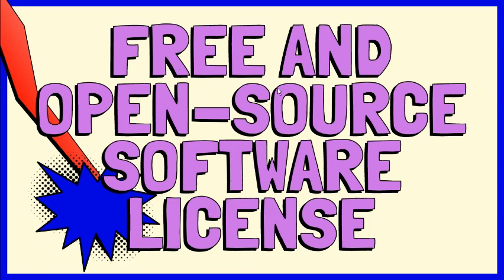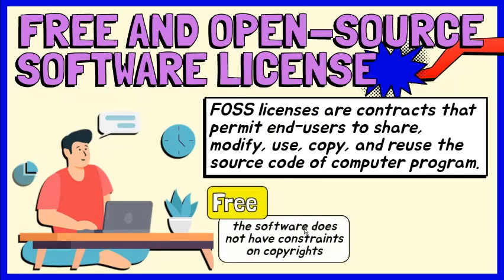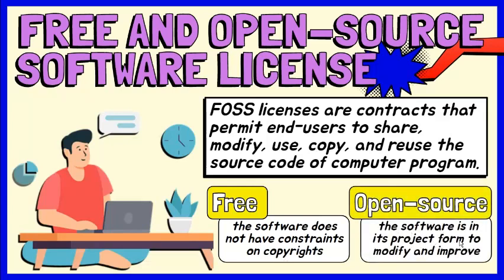The second broad category is free and open source software licenses. These are contracts that permit end users to share, modify, use, copy, and reuse a software product's source code. The term free indicates that the software does not have constraints on copyrights. The term open source indicates the software is in its project form, enabling expert developers to modify and improve the software. Open source software may be sold or distributed free of charge, but it must in every case include the source code.